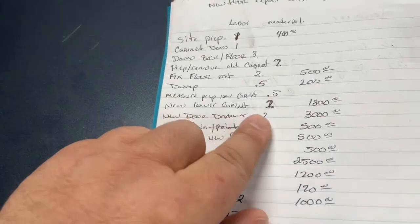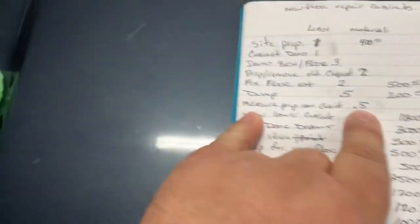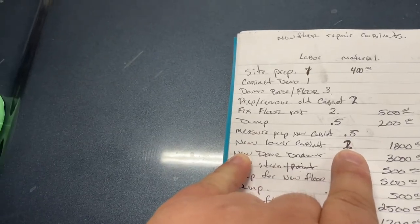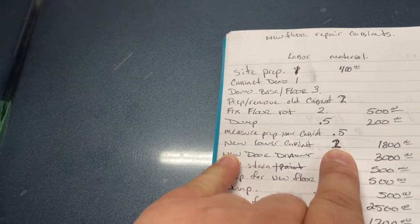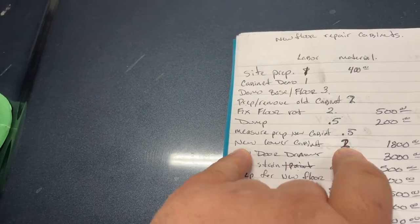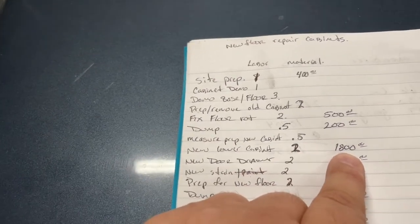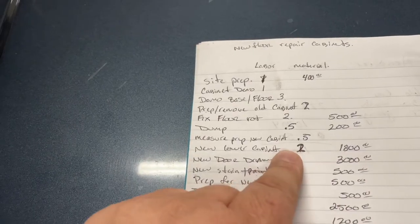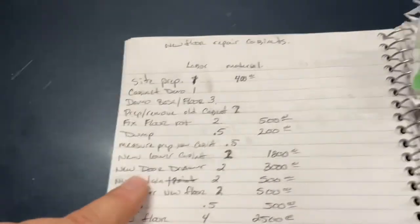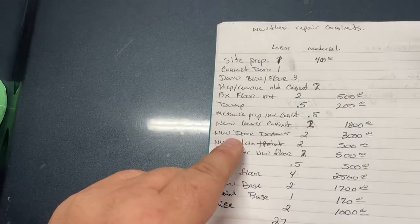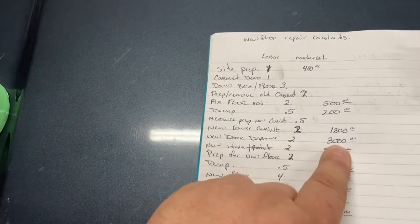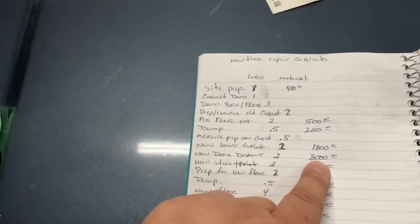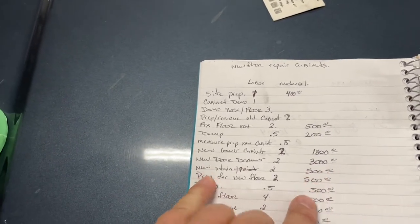All right. New lower cabinet. Once we prep, once we get all the measurements and everything like that, I figure it's going to take two days. So about 16 man hours with us, two guys, one day or one guy, two days and $1,800 to have all that built and cut and stuff like that. Then we're going to have the new drawer, the new door and drawer faces, about two days to install them and about $3,000 to have all that stuff built. We have it built by a third party, a subcontractor.